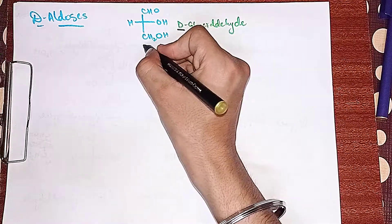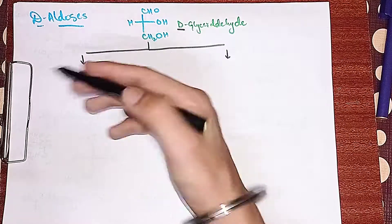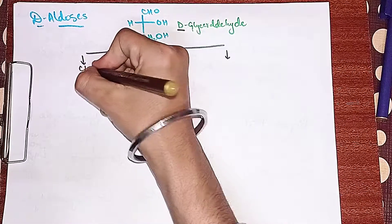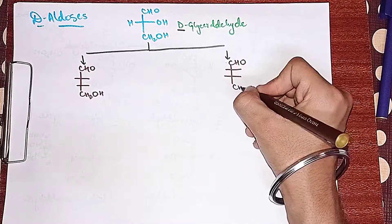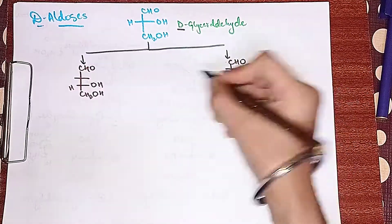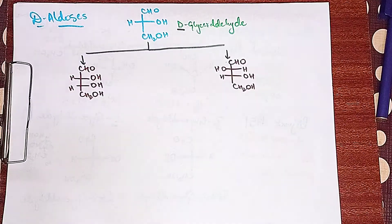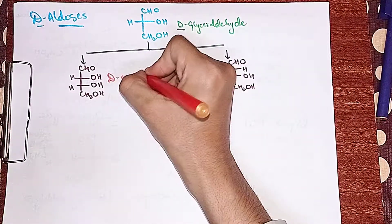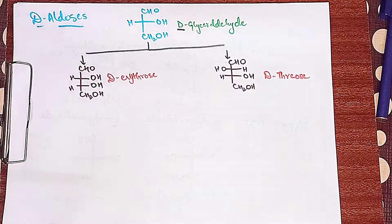By adding a carbon atom to D-glyceraldehyde, we get two 4-carbon compounds. One has the new carbon's OH on the right — that is D-erythrose. The other has the new carbon's OH on the left — that is D-threose. So erythrose and threose are the two 4-carbon aldoses derived from D-glyceraldehyde.